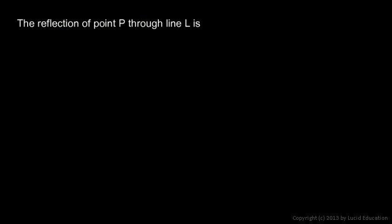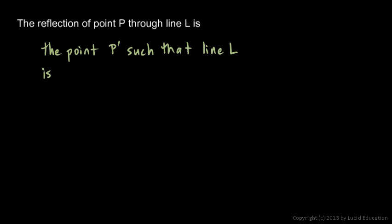This leads us to a definition: the reflection of point P through line L is the point P prime such that line L is the perpendicular bisector of segment PP prime.